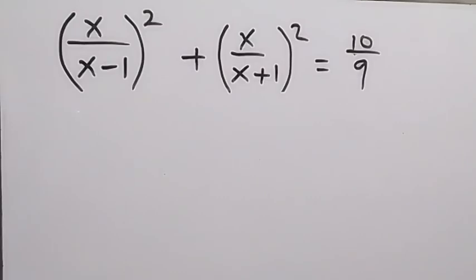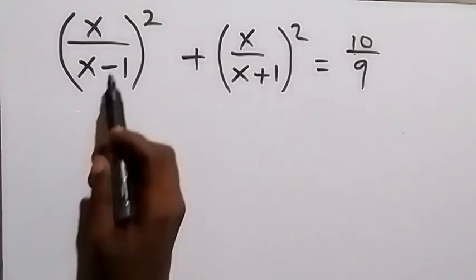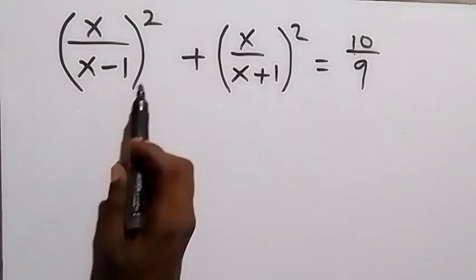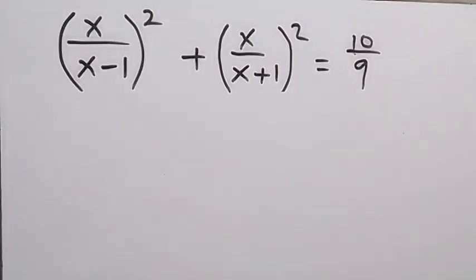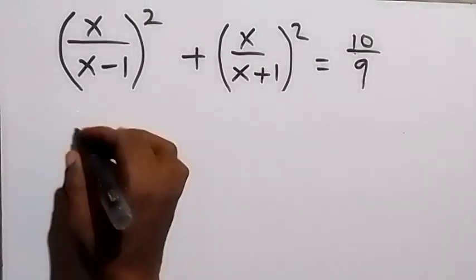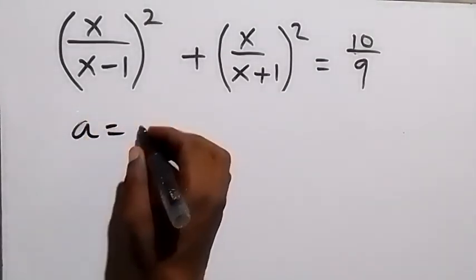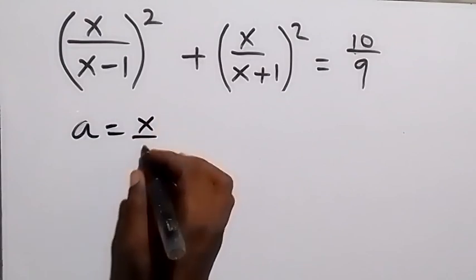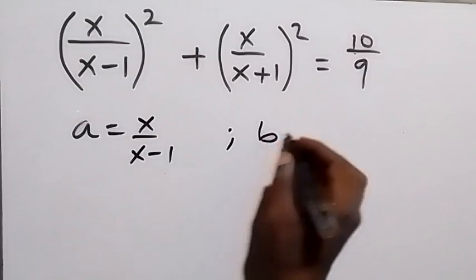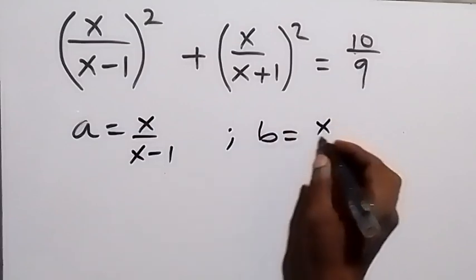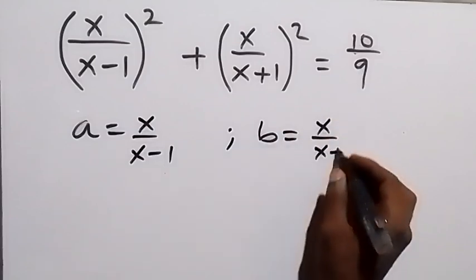Hello, you are welcome. How to solve this math olympiad problem: (x/(x-1))² + (x/(x+1))² = 10/9. From here, let's make a = x/(x-1) and also make b = x/(x+1).